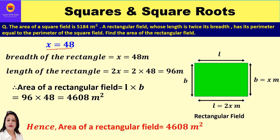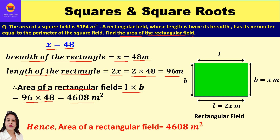So the breadth of the rectangle, which was x, is 48 meters, and the length of the rectangle, which was 2x = 2 × 48, is 96 meters. The question also asks us to find the area of the rectangular field. Area of the rectangular field = length × breadth = 96 × 48 = 4608 square meters.